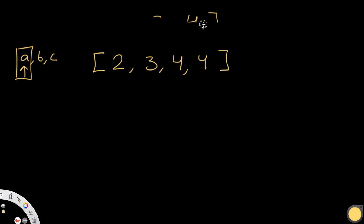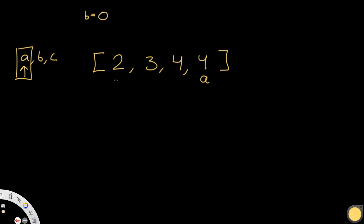We iterate through a from right to left. A starts at the rightmost value. Then b is set to index 0 and c is set to a's index minus 1, because we can't have repetition. This range between b and c is our search space. We iterate a from right to left, and I'll explain why that direction matters.